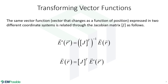Now that we have the Jacobian, we can use it to transform vector functions — and we have these in Maxwell's equations, since our electric and magnetic fields are vector functions. If we want our electric field in our transform coordinate system (indicated with prime notation), we pre-divide by the transpose of the Jacobian — that is, Jacobian-transpose-inverse times E gives us the transformed E. And we can do it the other way: pre-multiplying the transformed E by the transpose of the Jacobian gives us the field in the original coordinate system.